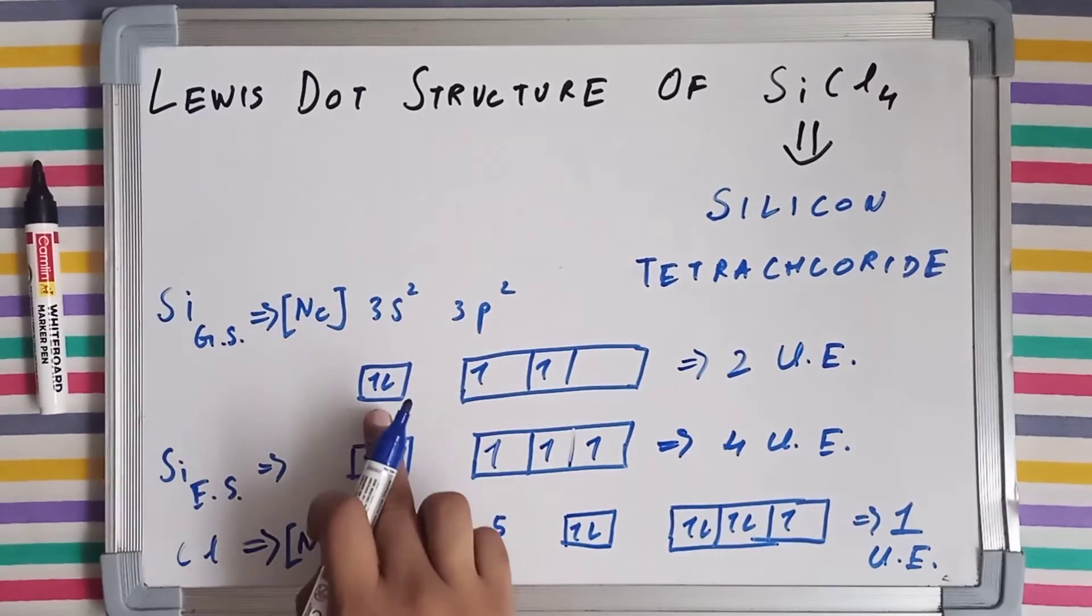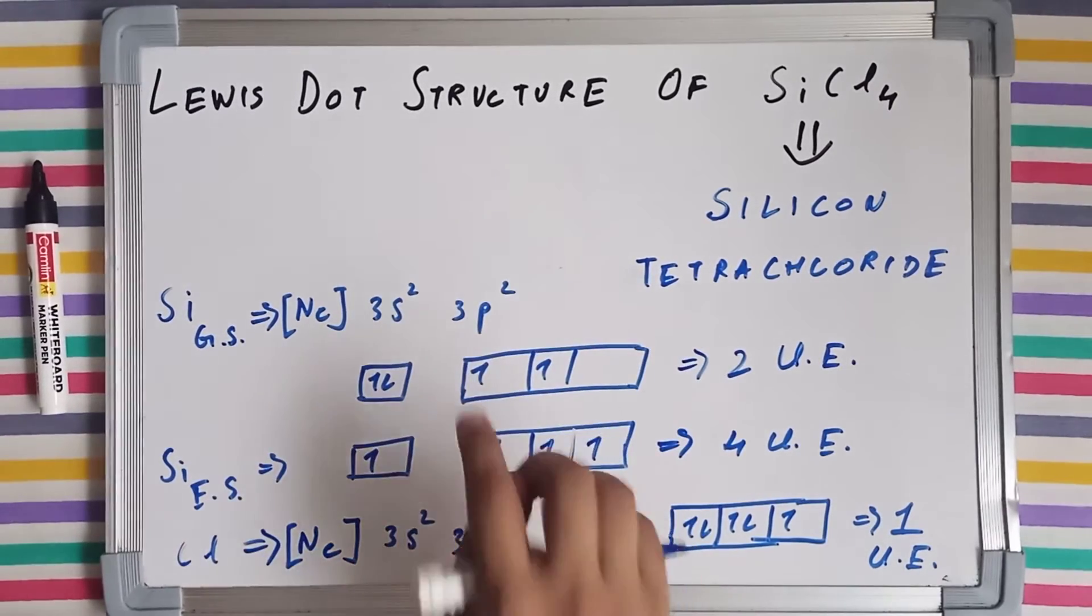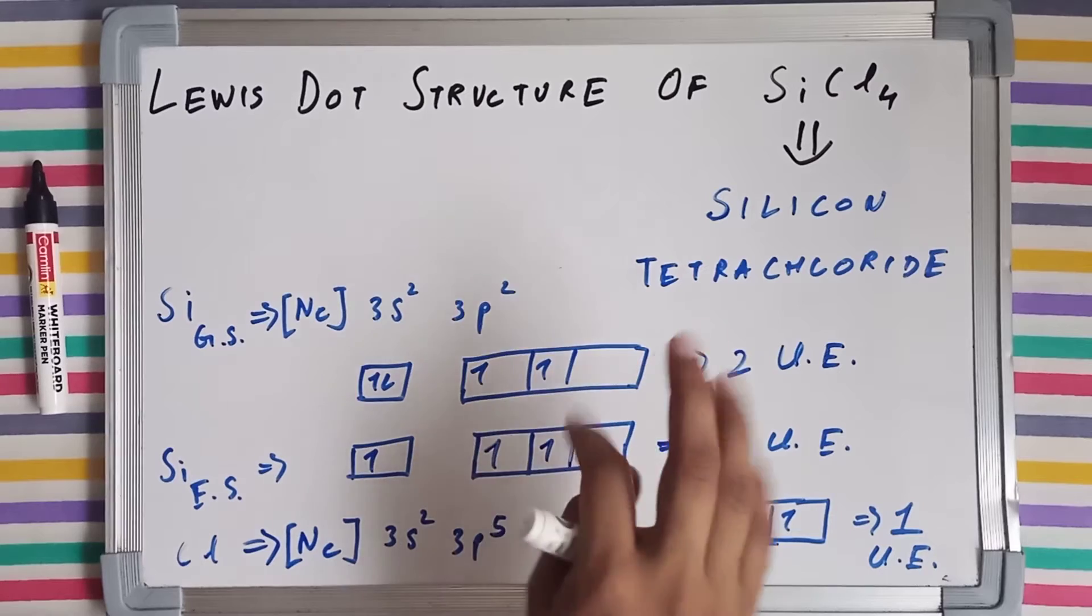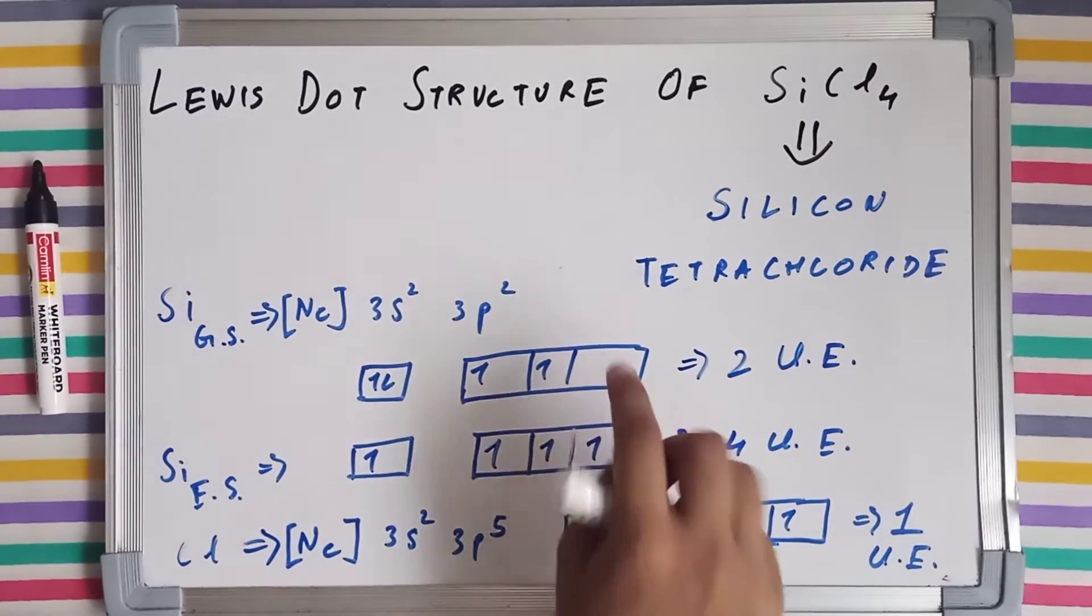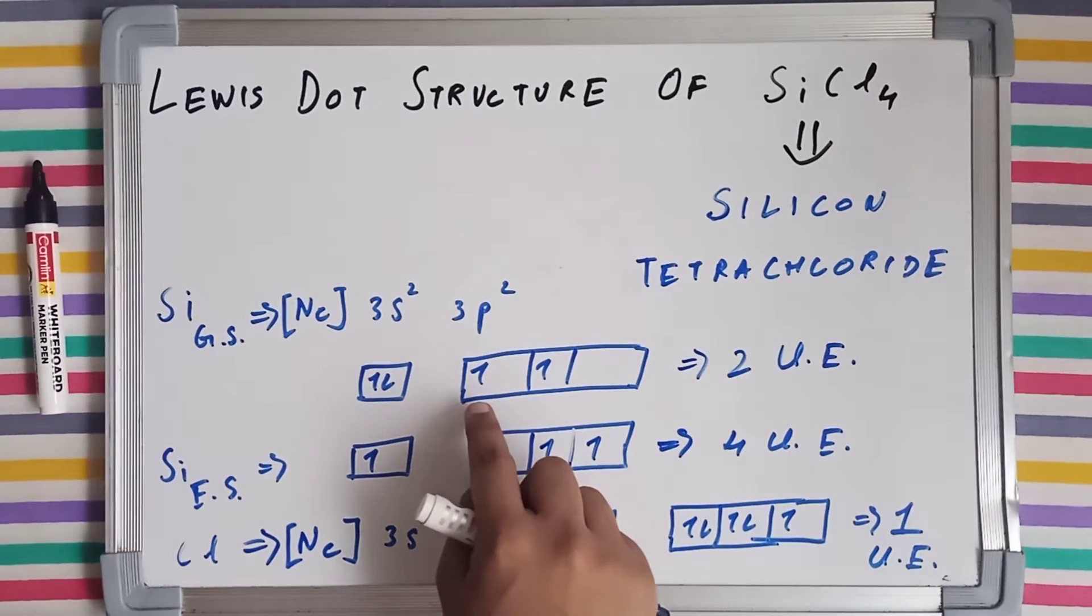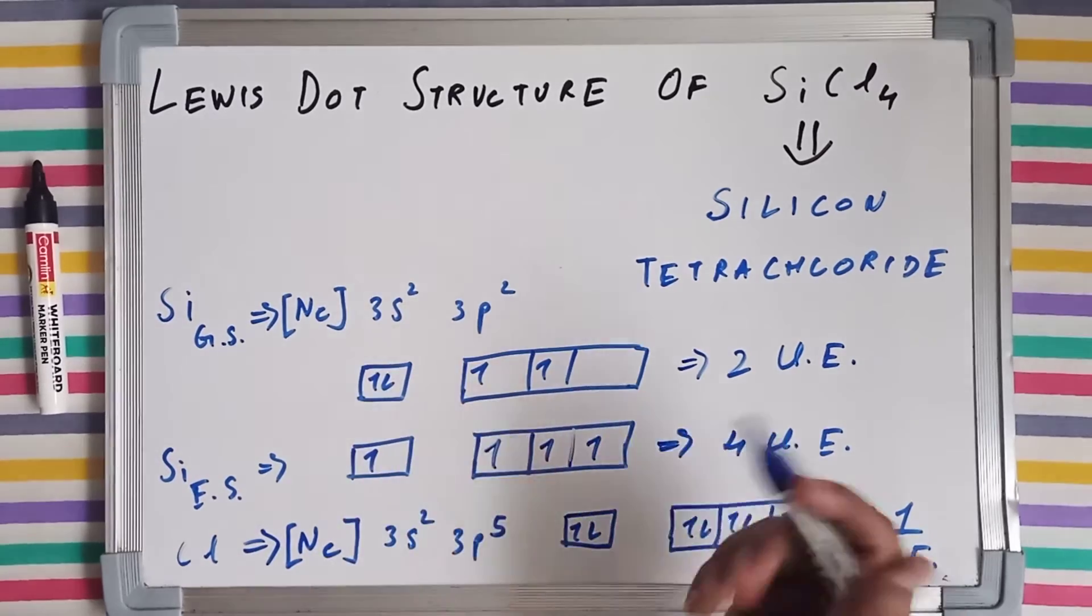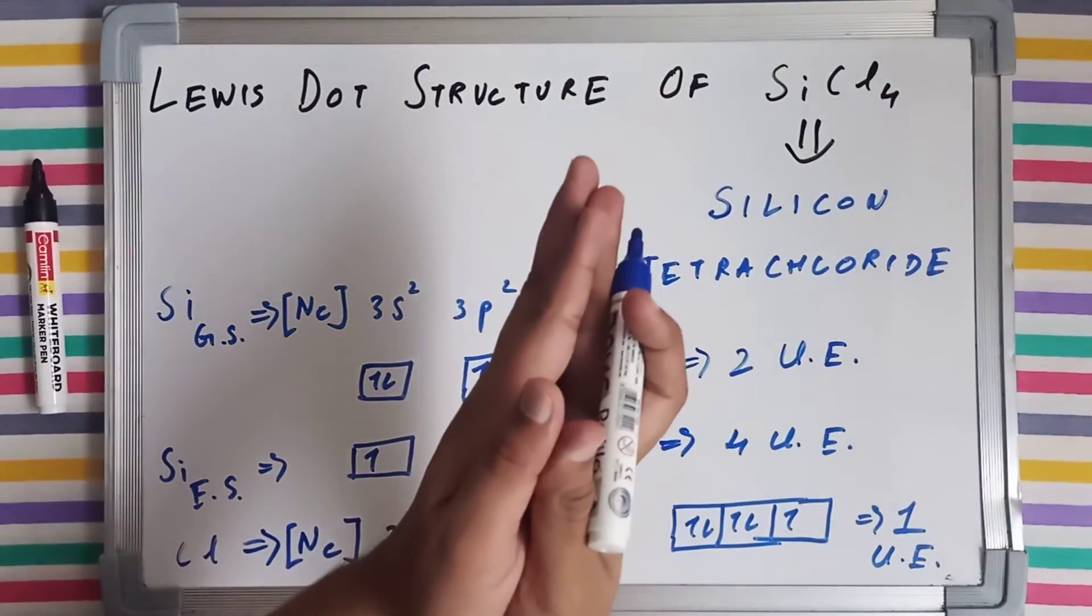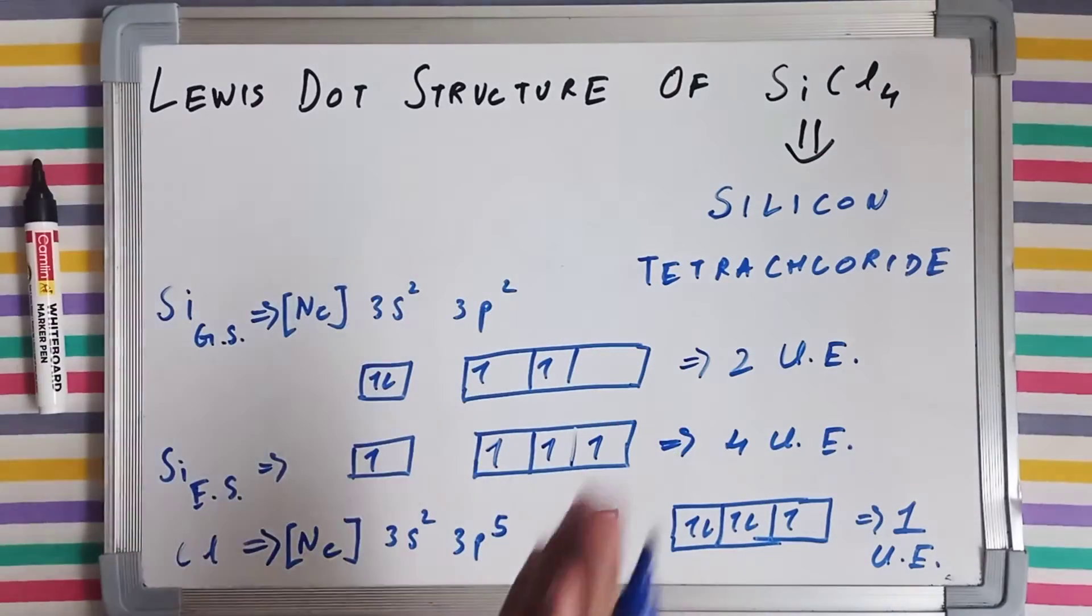The orbital diagram is this: 3s² has two electrons and 3p subshell has three orbitals—one, two, three—having two electrons as shown here. Now silicon is making four bonds with chlorine because it is written SiCl4.